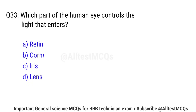Question No. 33: Which part of the human eye controls the amount of light that enters? Right option is C: Iris.